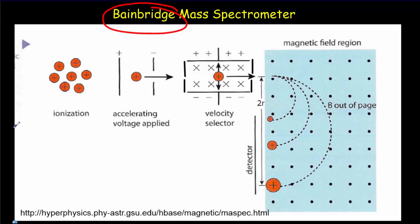There are four regions to the Bainbridge mass spectrometer. In the first region, you have an elemental gas and they go through a process where they get ionized and collimated. Collimated means put into a beam.